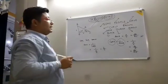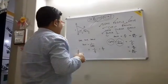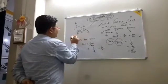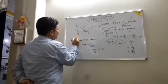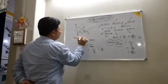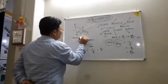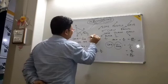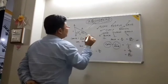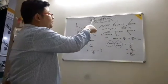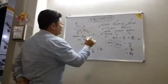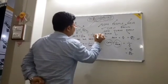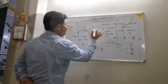Now we will come to cosec theta. Cosec theta is the reciprocal of sin theta. So cosec theta equals 1 by sin theta. Sin theta is P by H — perpendicular by hypotenuse — so cosec theta equals H by P.